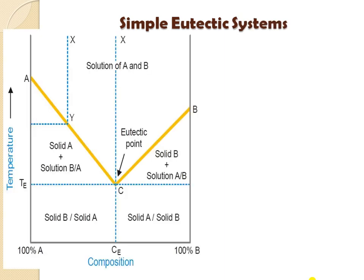This is the diagram for a simple eutectic system. The vertical axis shows temperature. Here component A is 100% on the left and component B is 100% on the right. As you move from left to right, the concentration of component A decreases. The center point consists of 50% A and 50% B. When moving from right to left, the amount of B is reduced from 100% down to zero, and the same is the case for component A.